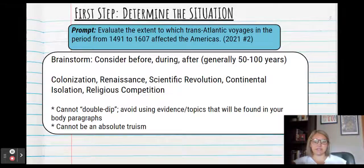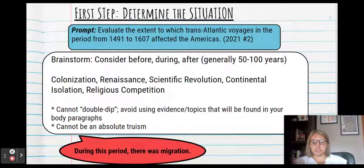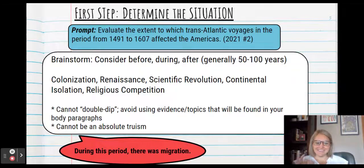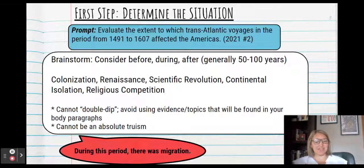Another important thing to note is that your contextualization cannot be an absolute truism. Now, here's what I mean by an absolute truism. During this period, there is migration. This is pretty much true throughout American history. You need to give more. It has to be more specific. You could use migration as your contextualization, but it cannot be this vague.